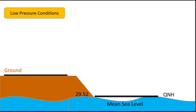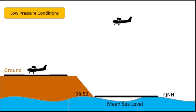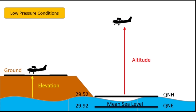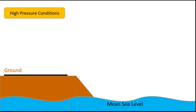What will happen in low pressure conditions? It means the barometric pressure at mean sea level is lower than 29.92 inches of mercury. For example, if the pressure at mean sea level is 29.50 inches of mercury and the pilot feeds 29.50 as the barometric reference, it will give altitude in air and elevation of that airfield on the ground. Since the isobar of 29.92 inches of mercury will be lower than mean sea level in this condition, flight level will be higher than altitude.